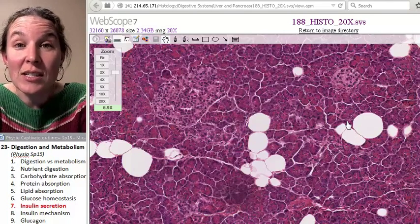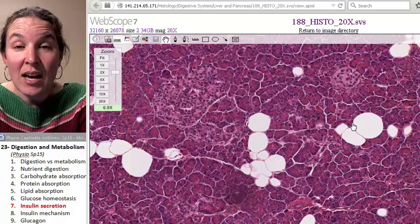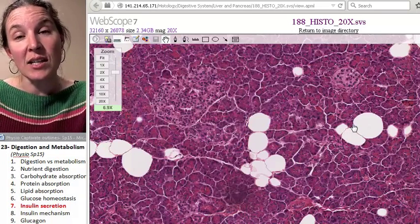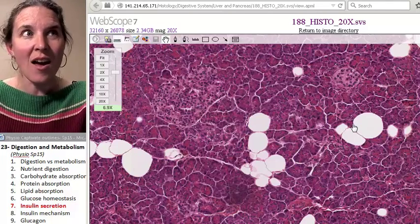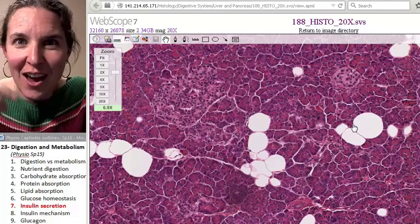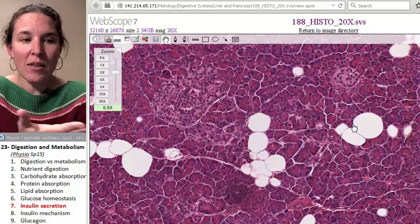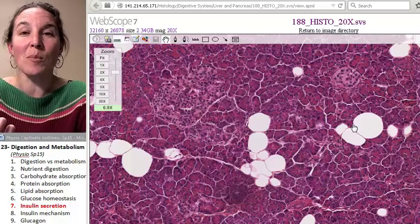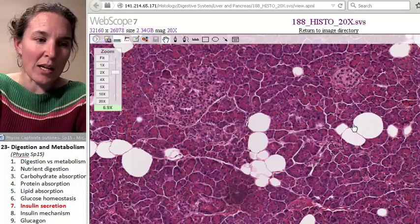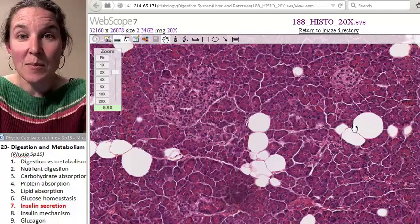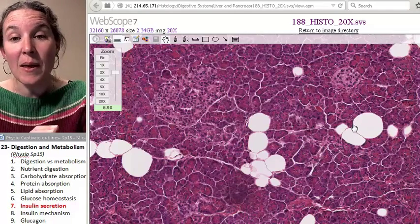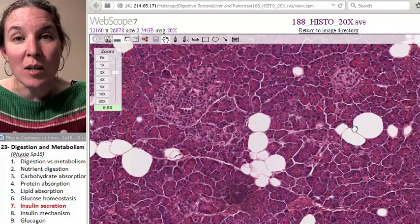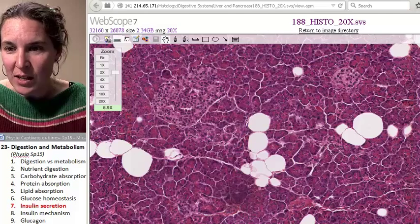that the pancreas is 99% an exocrine gland, which means 99% of its cells are producing stuff, 1.5 liters every 24 hours, that is dumped into the digestive tract. Remember, the digestive system is outside our body. So if we're dumping fluid and digestive enzymes into the small intestine, then that's all exocrine function. 99% of it is responsible for this. This is the 99%.